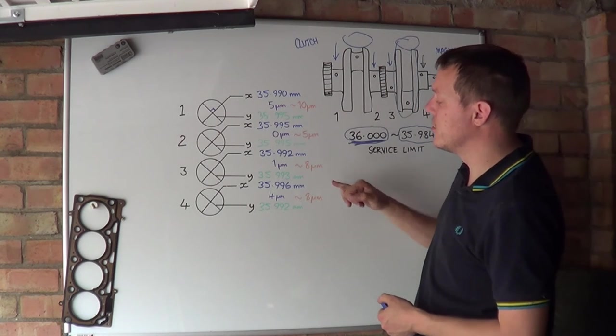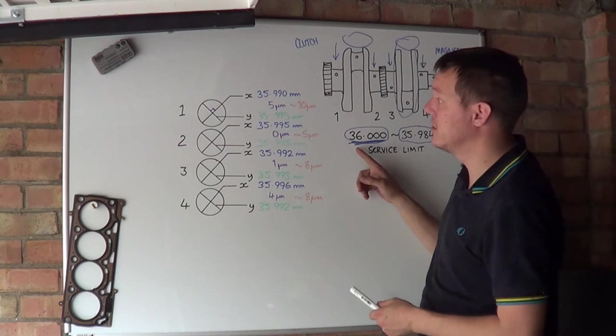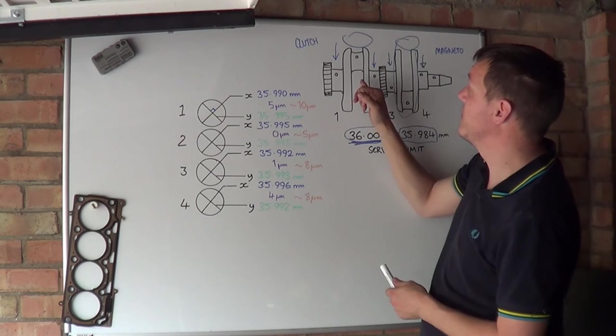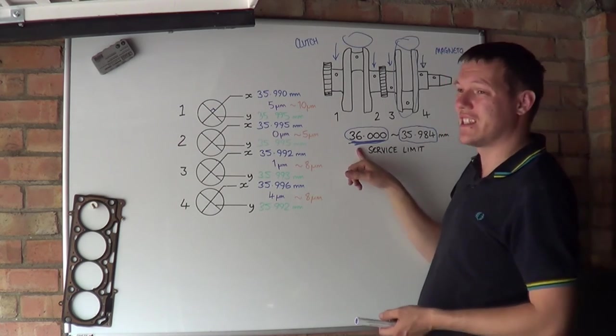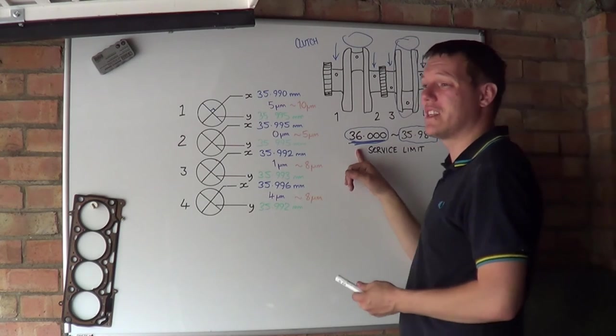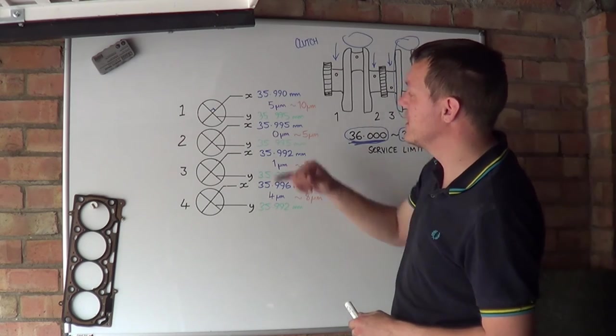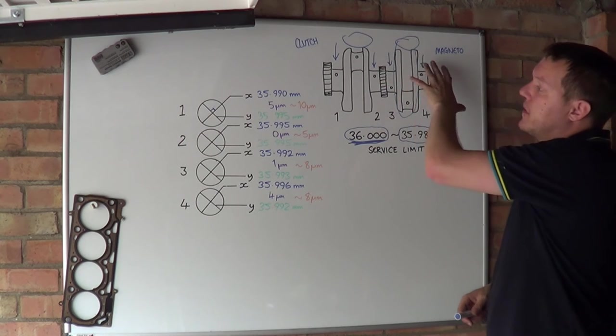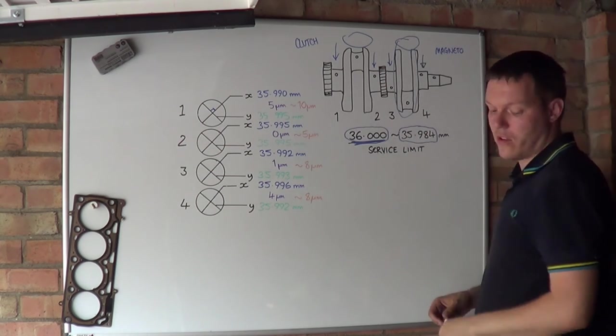The orange ones are only a guideline because we do not know our initial grind dimension. Basically, when the crankshaft came out of the factory, what was its dimension? The chances of it being 36mm bang on for every single journal, not when they're mass producing thousands of them. But anyway, this gives you an idea of how to measure, how to layout and what you're actually looking for.